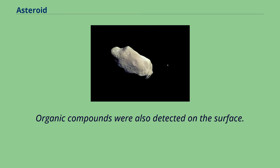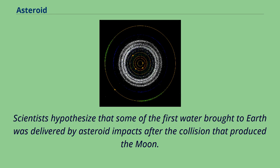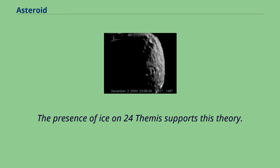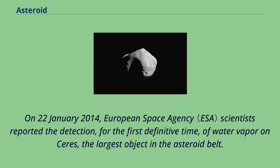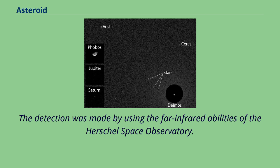Organic compounds were also detected on the surface of 24 Themis. Scientists hypothesized that some of the first water brought to Earth was delivered by asteroid impacts after the collision that produced the Moon, and the presence of ice on 24 Themis supports this theory. In October 2013, water was detected on an extrasolar body for the first time, on an asteroid orbiting the white dwarf GD-61. On January 22, 2014, European Space Agency scientists reported the detection, for the first definitive time, of water vapor on Ceres, the largest object in the asteroid belt, using the far-infrared abilities of the Herschel Space Observatory.